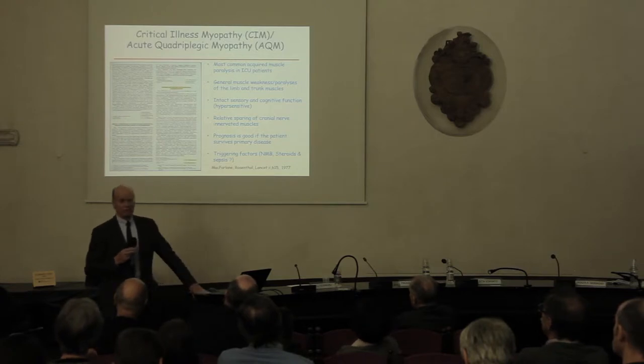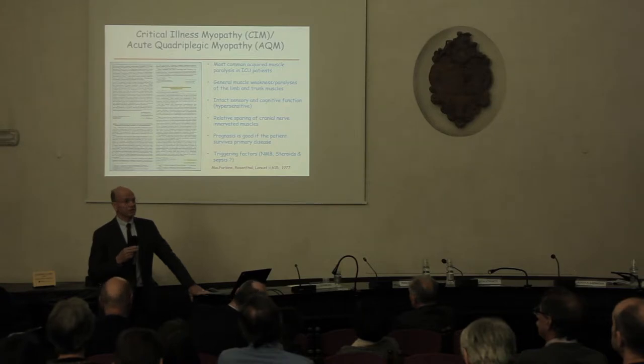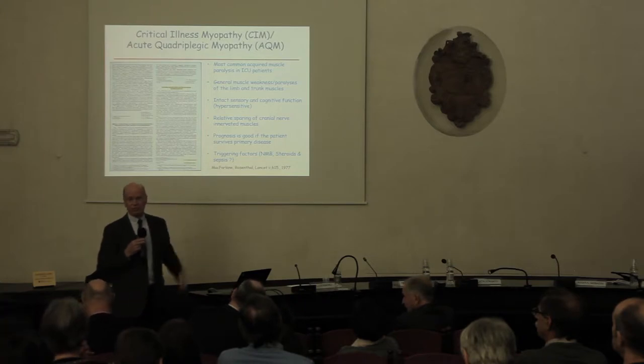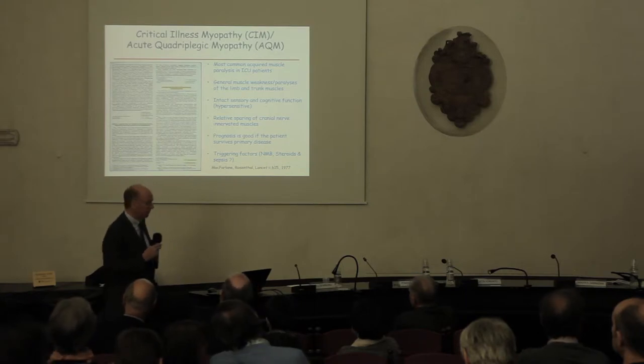This is the first description I know of a patient with critical illness myopathy — a young woman with status asthmaticus who came to the emergency room, could not be cured, was transferred to the ICU where she was given massive doses of steroids and hooked up to the ventilator to ensure oxygenation. When the infection was cured and weaning started, she was found to be quadriplegic — she couldn't move any muscles below a certain level, despite intact cognitive and sensory function. The triggering factors considered at that time were neuromuscular blockers, steroids, and sepsis.